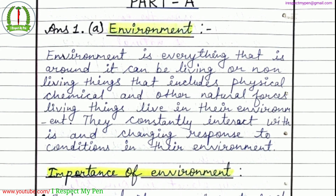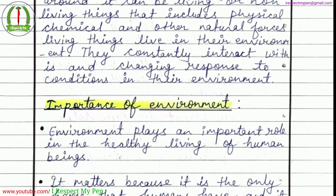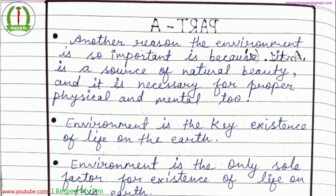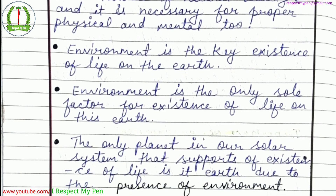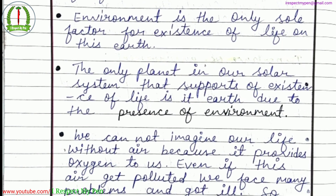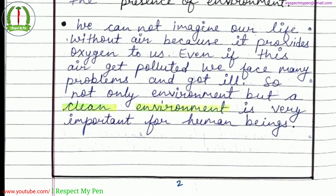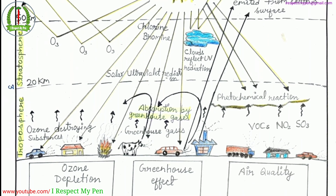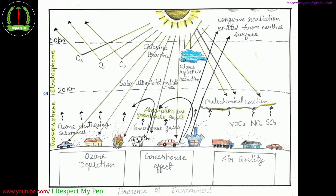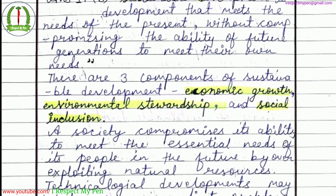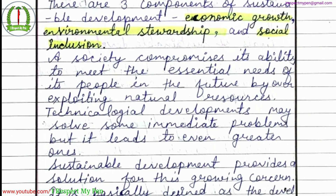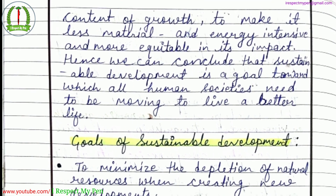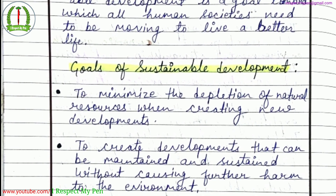Dear sincere learner, we are uploading a solved assignment for all bachelor's degree programs under CBCS — that is BSCG, BAG, and BCOMG. The title of the assignment is Ability Enhancement Compulsory Courses (AECC) on Environmental Studies. The course code of the assignment is BEVAE 181.